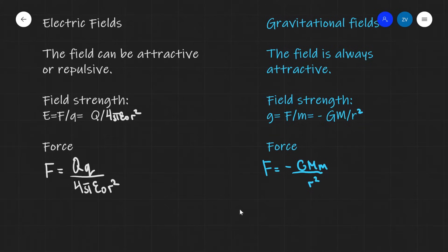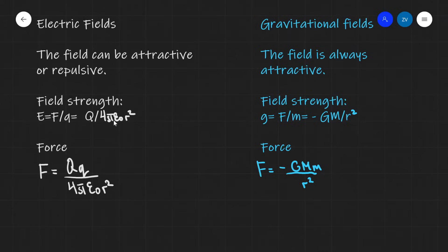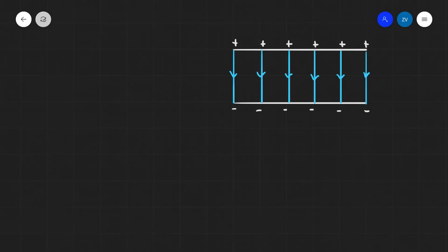Comparing electric and gravitational fields directly: electric fields can be both attractive or repulsive depending on the sign of the charges, whereas gravitational fields are always attractive. Electric field strength is force per unit positive charge; gravitational field strength is force per unit mass. The field strength for electric fields is Q / (4πε₀r²) and for gravitational fields is −GM/r². Both force equations are inversely proportional to the square of distance.